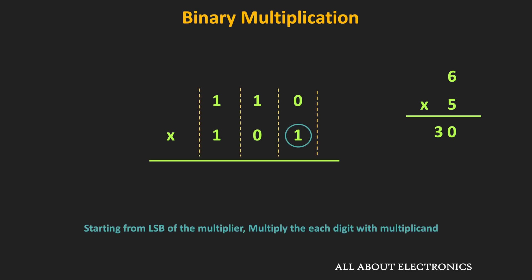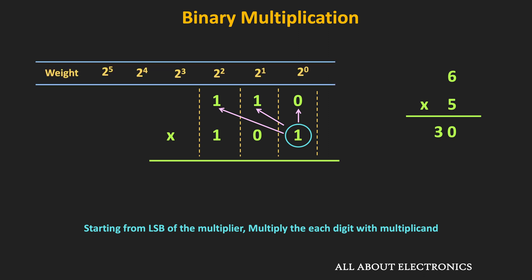So if we start from the LSB, then first we will multiply it with the 0, then with the 1, and then with the MSB. Now, when we are multiplying these binary digits, we are also multiplying their weights. And according to their weights, we will place the result in the particular column.